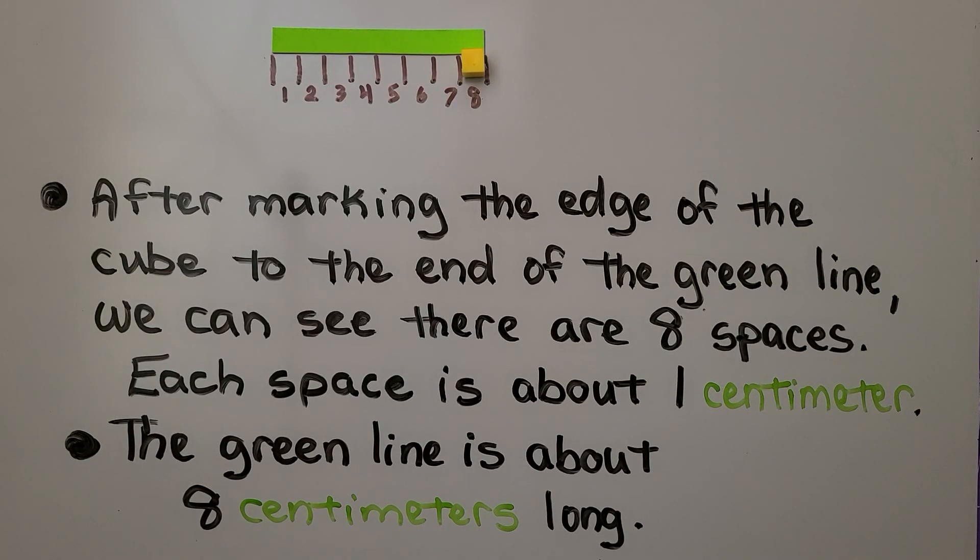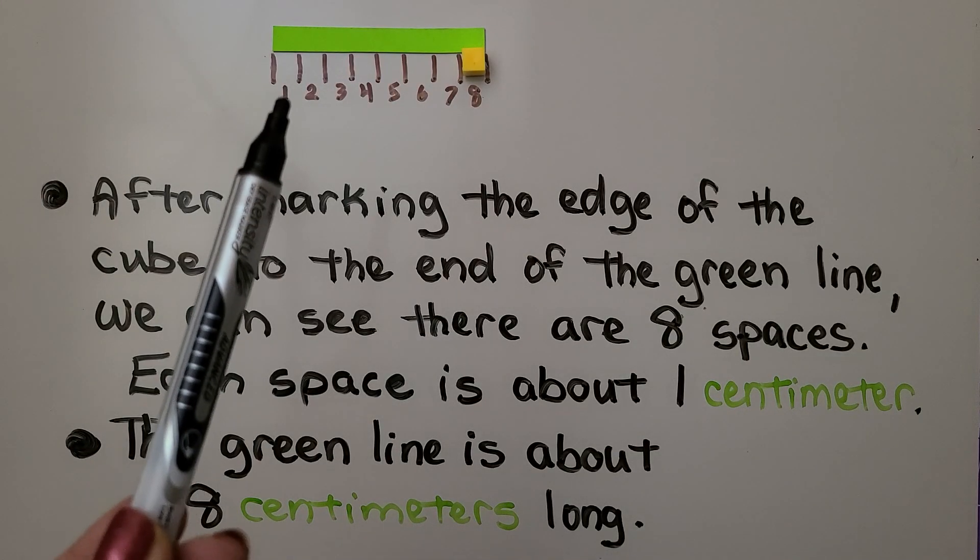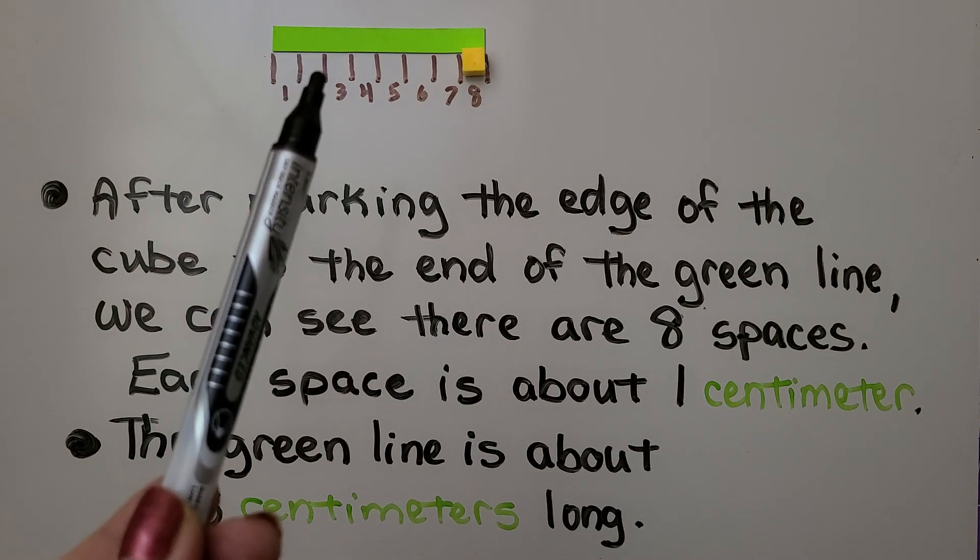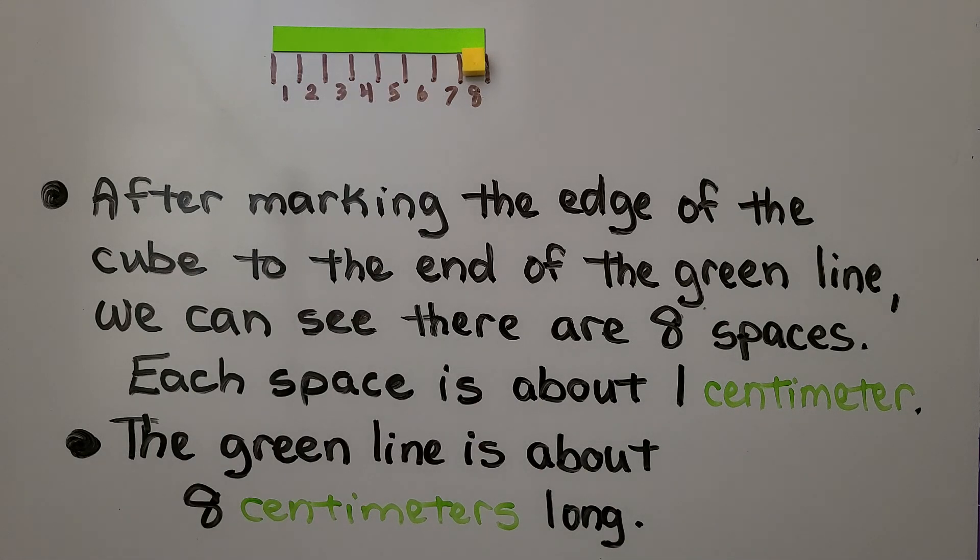After marking the edge of the cube to the end of the green line, we had the cube here and we drew a line. We moved the cube over, drew another line, and we kept moving the cube and drawing a little mark, a little line, and we can see there are eight spaces and each space is about one centimeter. So the green line is about eight centimeters long.